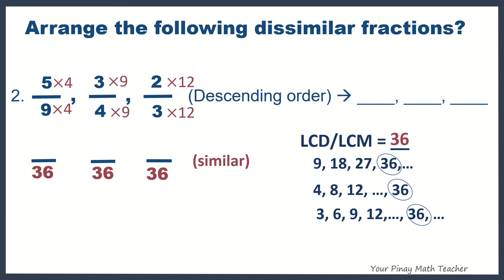And so, with 2, that must be multiplied by 12. So, 5 times 4, we have 20 for the first fraction. And then,